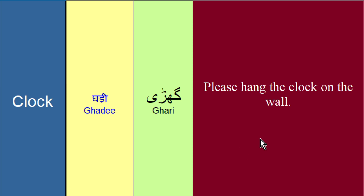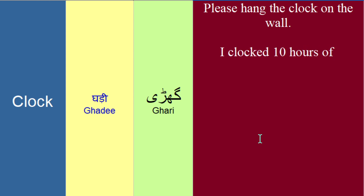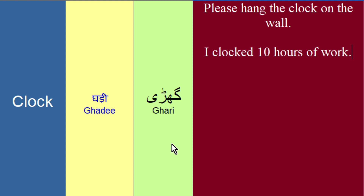Jaysay mein keh sakta hoon: 'I clocked 10 hours of work' — ke meinne 10 ghantay kaam kiya. Isko clock kerna ye bhi kahtay hai ke puran zamanay mein jo factories hoti thi, jab aap factory mein daakhil hotay thay toh aap clock in kertay thay ke mein 8 bajay daakhil hoaan hoon. Aur jab aap bahar aatay thay toh phir aap clock out kertay thay ke mein 6 bajay ja raha hoon. Toh iska matlab ho gya ke aapne us din 8 ghantay kaam kiya.